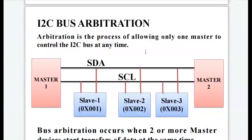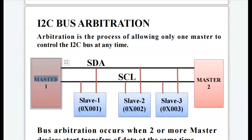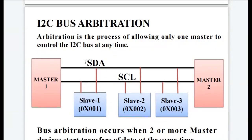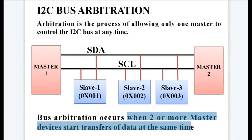I2C bus arbitration is the process of allowing only one master to control the I2C bus at any time. Here there are two master devices — master one and master two — and three slave devices. At any given time, only one master will have control over the SDA and SCL lines. Arbitration occurs when two or more master devices start transfer of data at the same time.